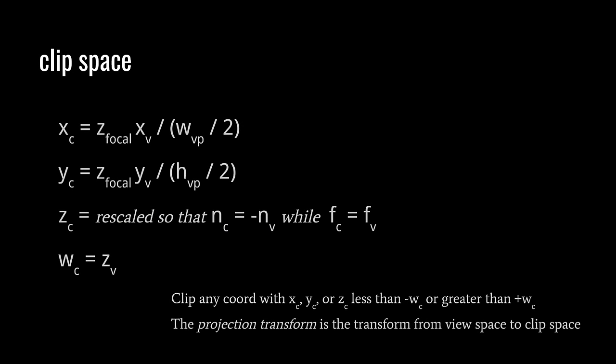To get from view space into clip space: firstly, the w of clip space is simply the same value as the z value from view space — that's the easy part. To get the x of clip space, we take the x of view space, multiply it by the focal length, and divide it by half the width of the view plane. The view plane is the imaginary grid of pixels centered on the origin, set a focal length distance up the z-axis, with some width and height that determines the aspect ratio of our output image.